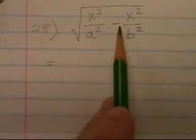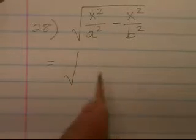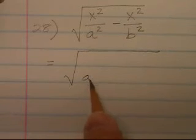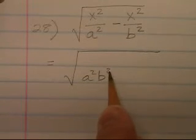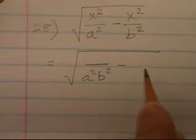I have a subtraction problem in the radicand with different denominators. So I may not enjoy it, but I need to get a common denominator, which will be a squared b squared. I need to rewrite both fractions so they have this as the denominator.